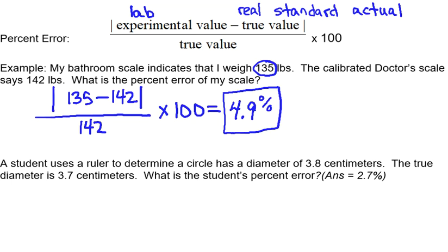A second example, a student uses a ruler to determine a circle has a diameter of 3.8 centimeters. The true diameter is 3.7 centimeters. What is the student's percent error? So the student determined that the value was 3.8. So that's your lab value.